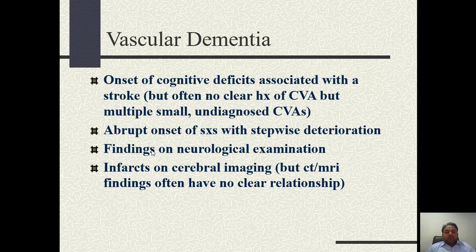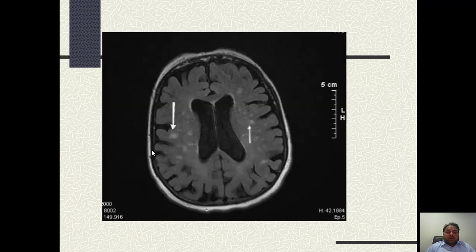Clinically we can have signs and symptoms of stroke. CT or MRI may be ordered to see for the infarcts. This is an MRI of the brain of a patient with vascular dementia showing multiple tiny infarcts in different regions bilaterally across different regions of the brain.